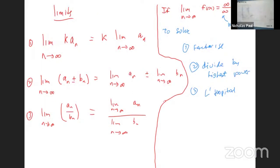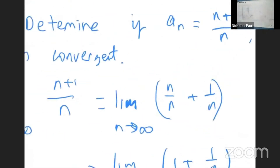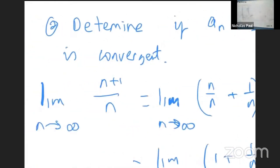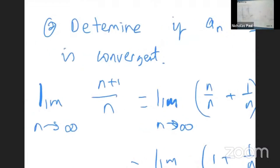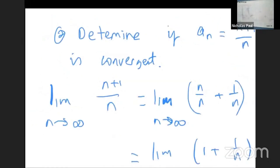Alright, is anybody writing? Anybody writing online? Okay, good. So let's give it a try. Determine if a_n, which equals (n plus 1) over n, converges or not. We need to find a way to simplify this, so let's see how it works out.